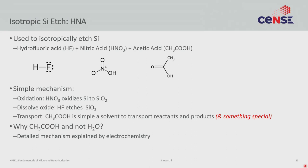The first topic we shall talk about today is the isotropic silicon etch, colloquially also called HNA. The H here stands for hydrofluoric acid, N stands for nitric acid, and A stands for acetic acid, which is the diluent. The basic mechanism is fairly easy to understand: silicon is first oxidized using HNO3 to silicon dioxide, and then the silicon dioxide gets etched with hydrofluoric acid to form a soluble complex. Acetic acid is simply a solvent to transport reactants and products away.